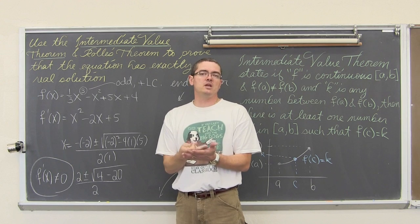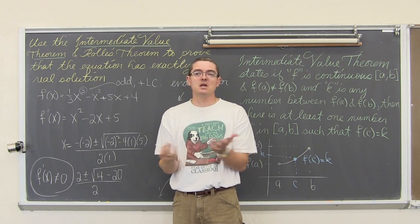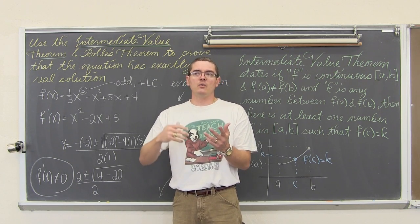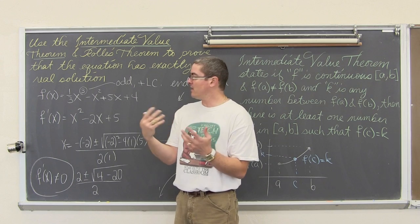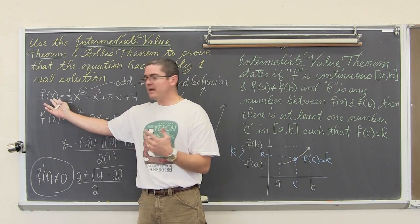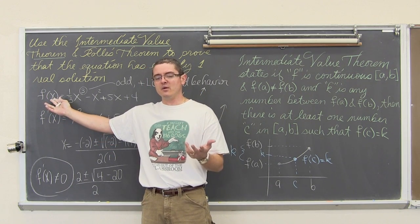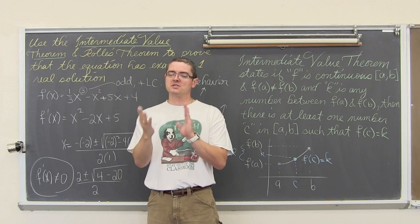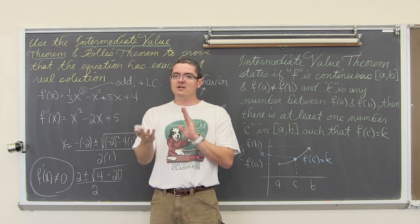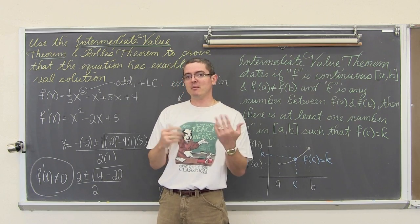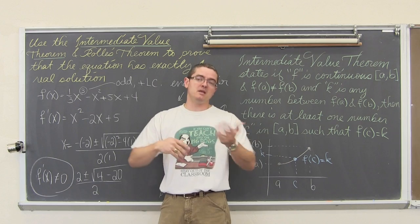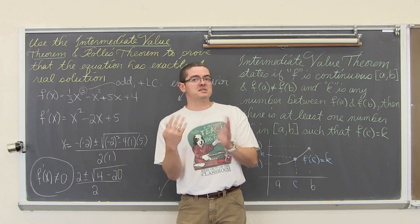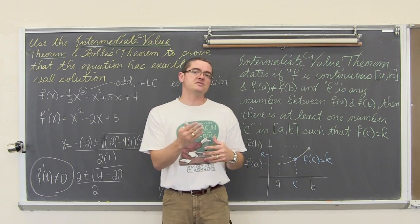Well, if the derivative will never equal zero, that means there is no interval where we can plug in an a value into this function and a b value into this function. There is no interval that is going to give you the same value where f of a equals f of b. Remember Rolle's Theorem. If f of a equals f of b, then there is a c within that interval that makes f prime of c equal to zero.